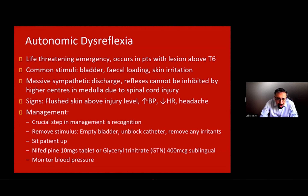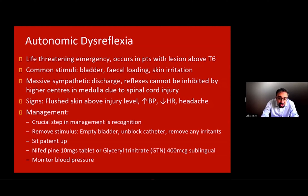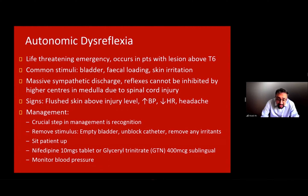Autonomic dysreflexia is a life-threatening emergency occurring in patients with lesions above T6. Common stimuli include bladder irritation, bladder overfilling, fecal loading, and skin irritation, causing massive sympathetic discharge that cannot be inhibited because higher centers have been disconnected. Signs include flushed skin above the injury level, hypertension, bradycardia, and headache. Management: remove the stimulus, empty the bladder, unblock the catheter, remove any irritants — this can occur during urodynamics or with a blocked catheter. Sit the patient up; pharmacotherapy includes nifedipine 10mg or GTN 400 micrograms sublingually. Monitor blood pressure until it settles.